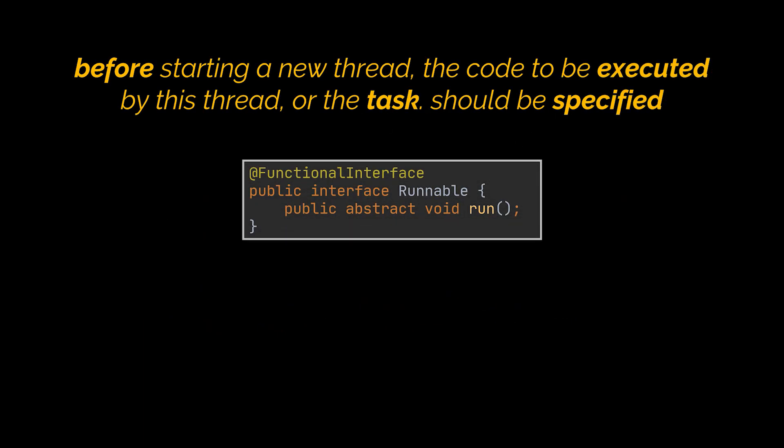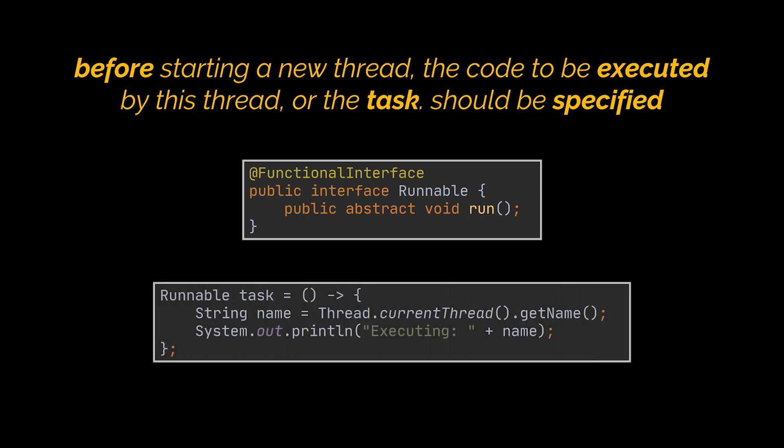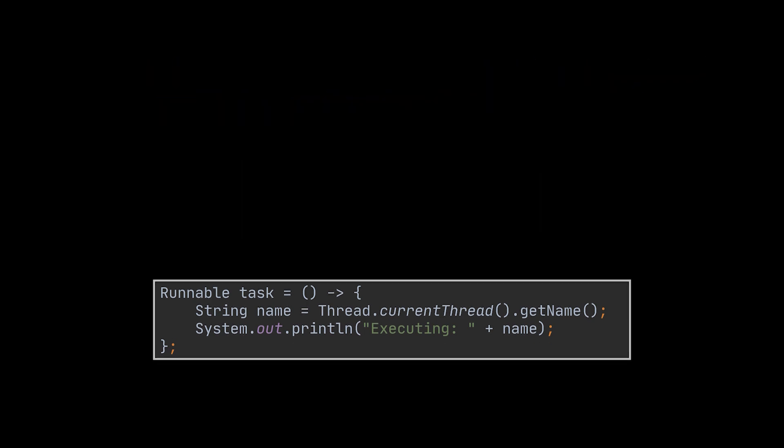Before starting a new thread you have to specify the code to be executed by this thread, often called the task. This is done by implementing Runnable, a functional interface defining a single void no-arguments method named run. In the example you see, we created a Runnable that prints the name of the thread handling it to the console.